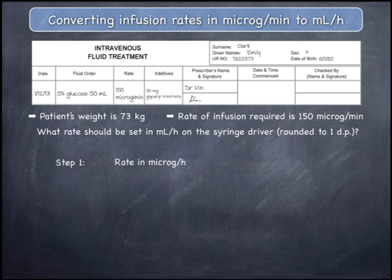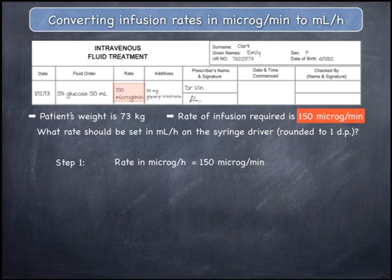Convert the rate in micrograms per minute to a rate in micrograms per hour. We want to change to a unit of hours because the final rate required is mils per hour, not mils per minute. The rate in micrograms per hour equals 150 micrograms per minute multiplied by 60 minutes per hour, which gives 9,000 micrograms per hour.